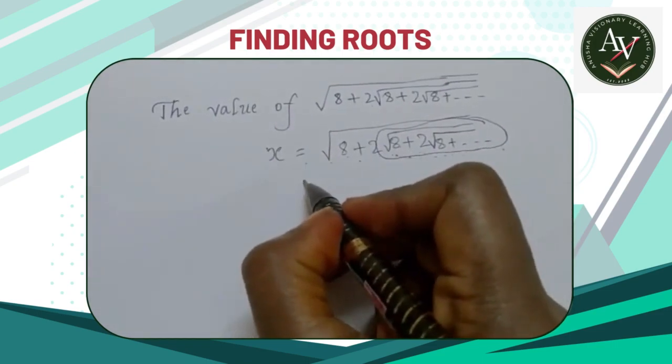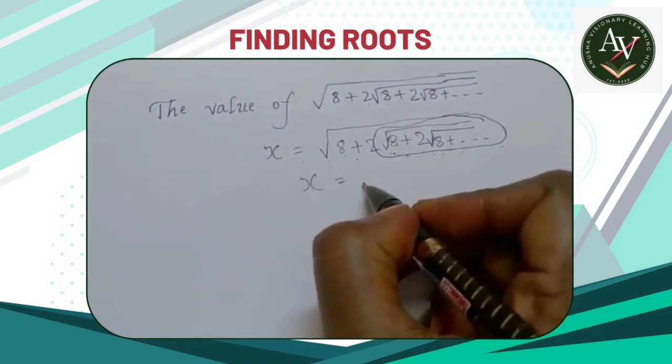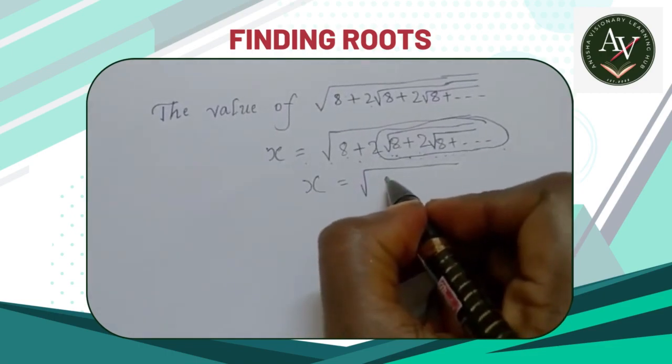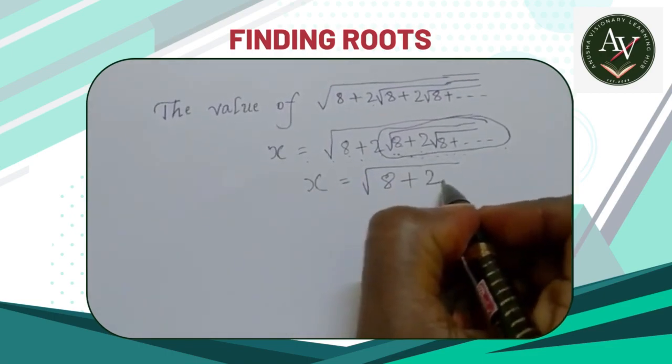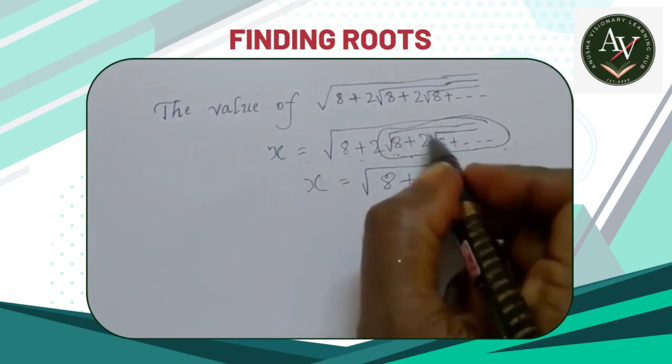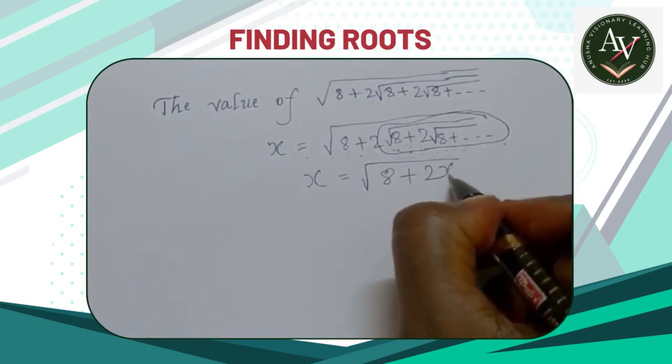Then it will be x = √(8 + 2x). We should write x here.